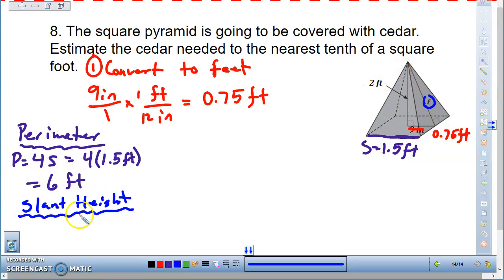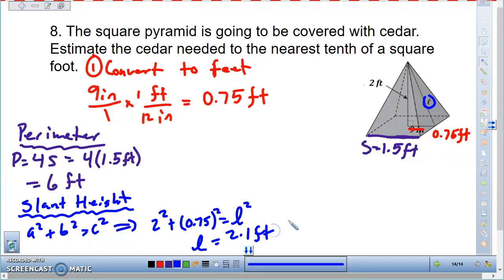So I can use Pythagorean theorem. So a squared plus b squared is equal to c squared, which gives us: I have 2 squared plus 0.75 squared will equal L squared. So when we calculate this, you end up getting L is equal to 2.1 feet.